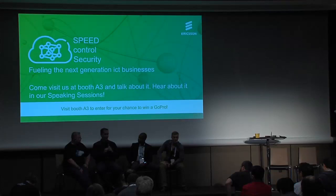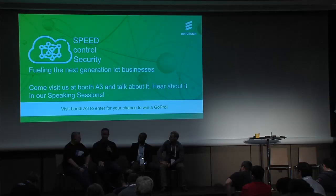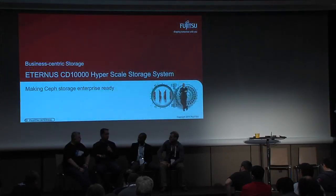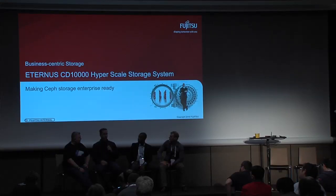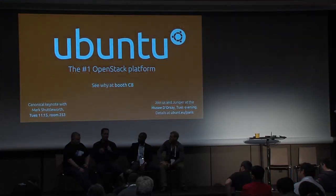I work with a customer whose backend persistent data store couldn't operate successfully at scale in EC2. So they rushed to provision raw bare metal for their MongoDB backend and put the front end in Amazon. For them that was hybrid cloud, although the private part was bare metal.